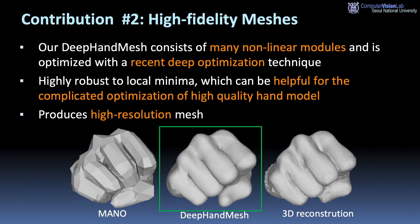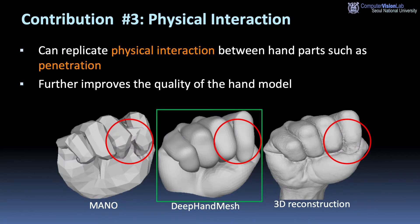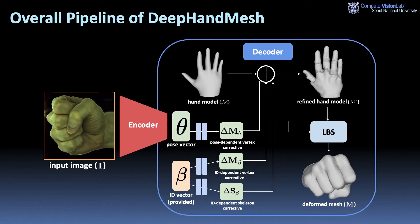In addition, it produces high-resolution meshes. Deep-hand mesh can replicate physical interaction between hand parts such as penetration, which further improves the quality of the hand model.